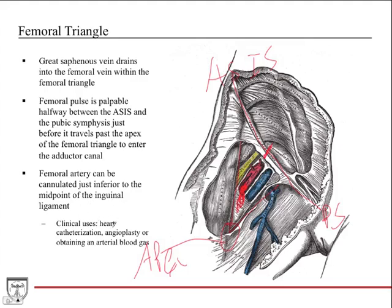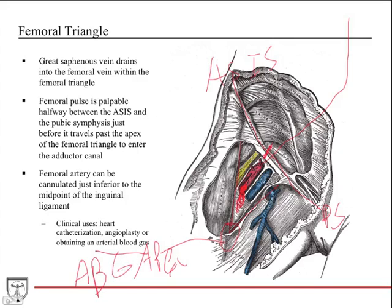Another clinical application: in the ICU for a critically ill patient, you can insert a needle into this femoral artery area to draw arterial blood for an arterial blood gas (ABG). So in this proximal portion of the femoral artery there are a number of different branches worth knowing, which are good to find in the cadaver lab.